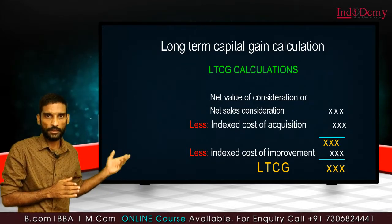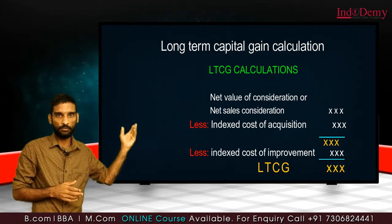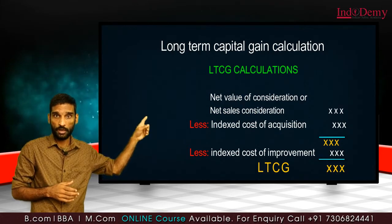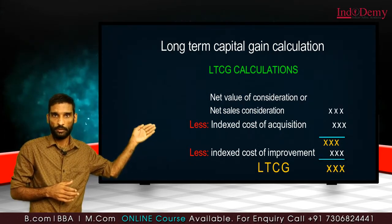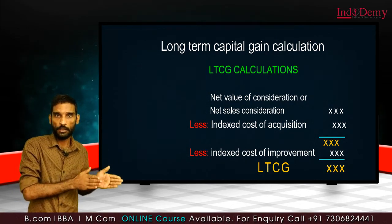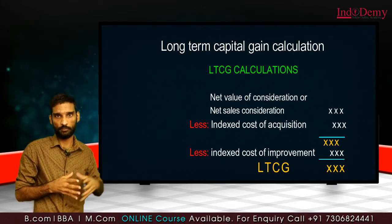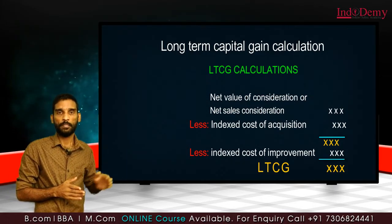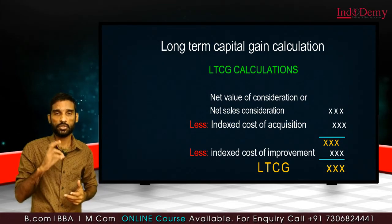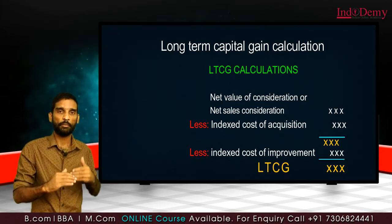CII is notified by the central government. At present, CII begins from the financial year 2001-02, where the base value is 100. For the financial year 2021-22, CII is provided. For the previous year 2019-20, CII is 280. When we are asked the LTCG in a university exam, the CII values are also provided.